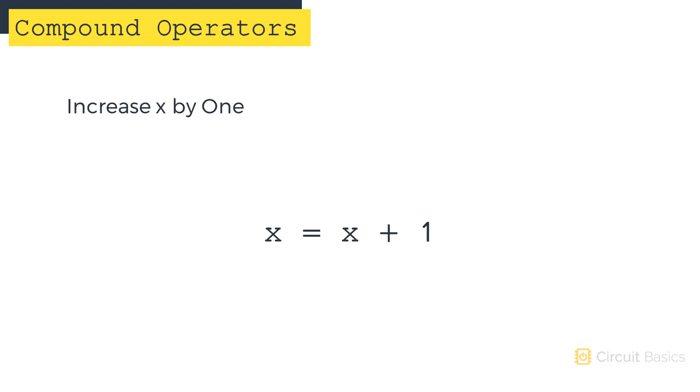Say you have a variable called x and want to increase its value by 1. The longhand way to do that is by writing x equals x plus 1. Instead of doing that, you could use a compound operator and just write x plus plus. The plus plus part is known as the increment operator.